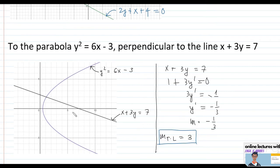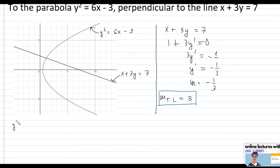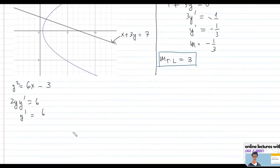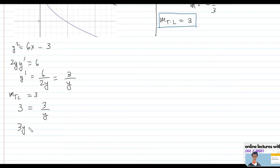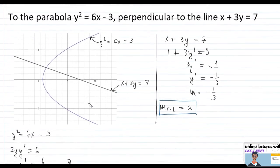The next step is to find what point or points on the parabola have slope equal to 3. We differentiate y squared equals 6x minus 3: 2y y prime equals 6, so y prime equals 6 over 2y, which simplifies to 3 over y. Setting 3 over y equal to 3 gives 3y equals 3, therefore y equals 1.